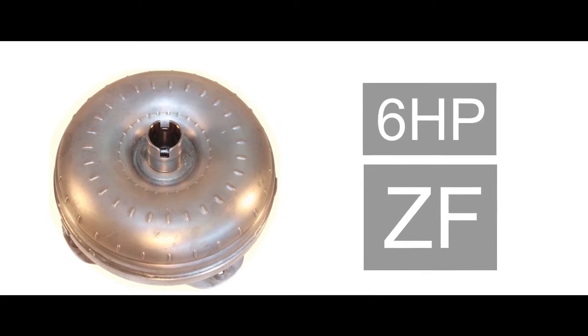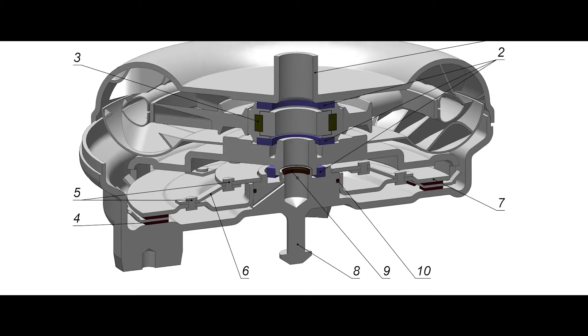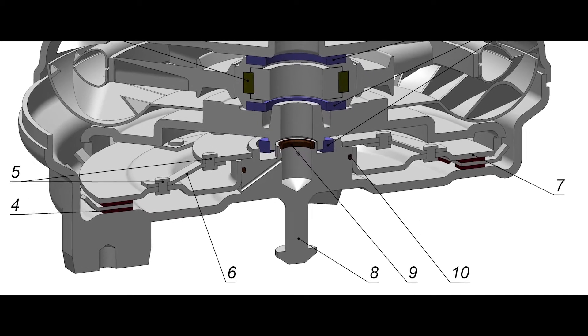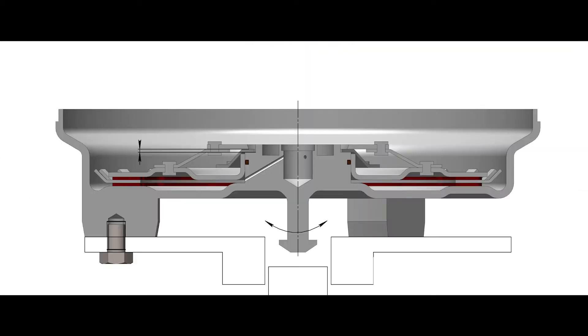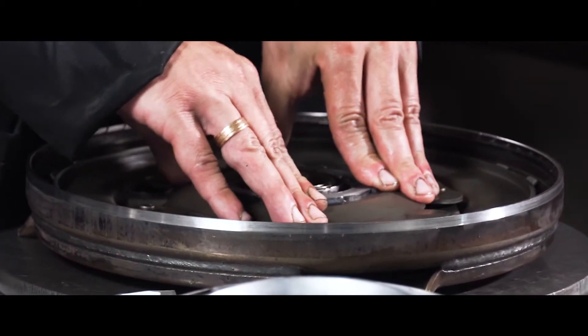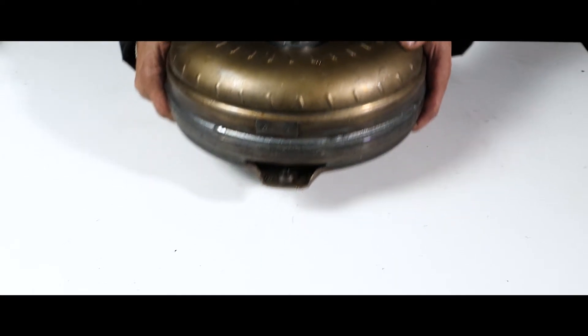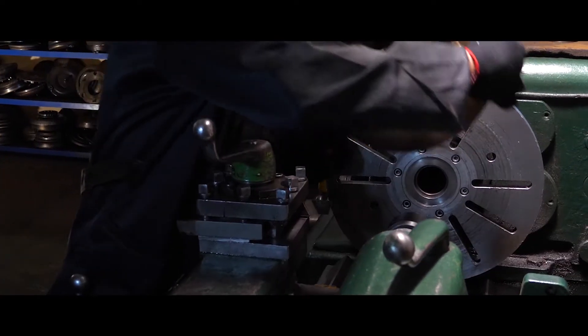ZF 6HP Series stock converters differ from other models by the presence of pre-tightened friction clutches. This design feature can become an obstacle for many workshops that specialize in the repair of automatic transmissions. In our video we will tell you about all the nuances of repairing 6HP Series stock converters using a specific example.